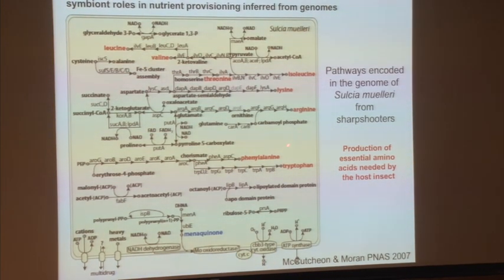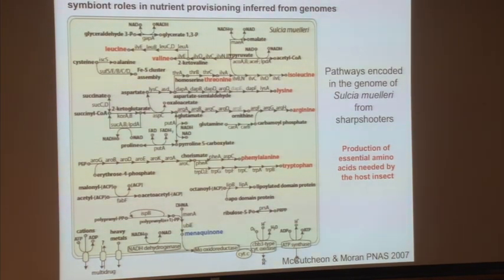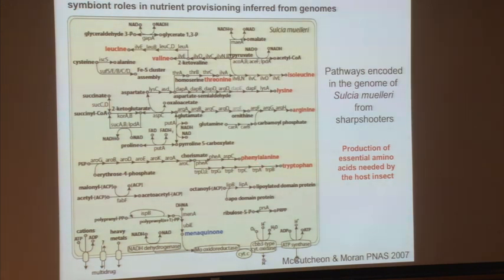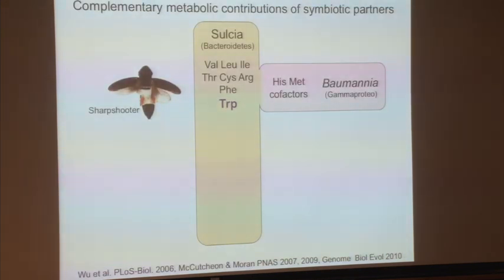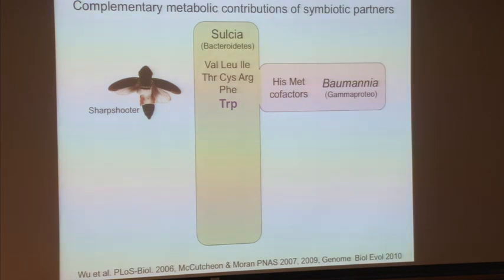You sequence the genome, figure out all the pathways that are intact, then predict the capabilities of these bacteria and puzzle out who's doing what. Sulcia has a tiny genome, and the red things on the metabolic map are essential amino acids it has the full pathway for — it makes eight of the ten that need to be provided for these hosts. It turns out Sulcia makes these eight, and Baumannia makes exactly the other two — histidine and methionine — so there's this perfect complementarity.